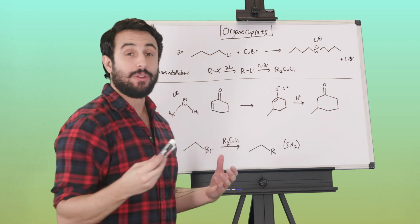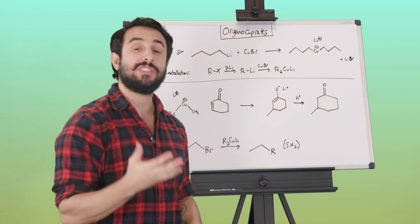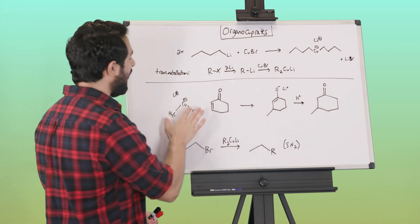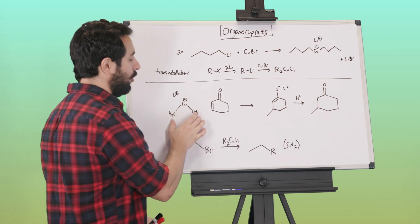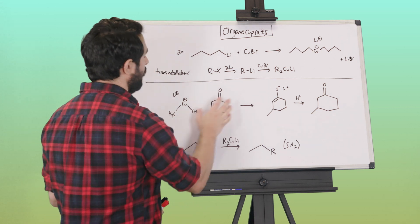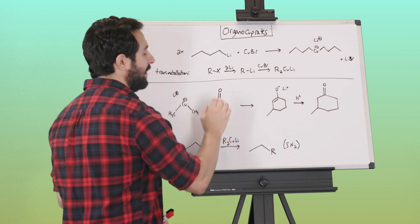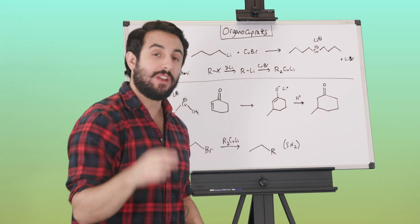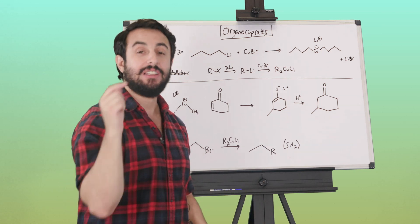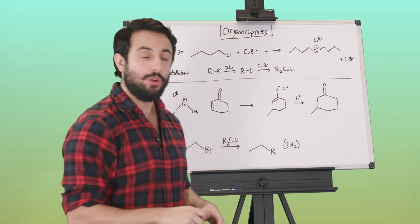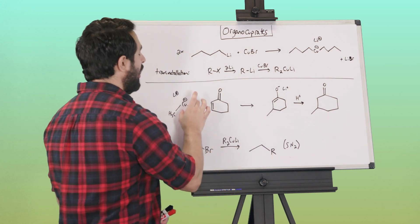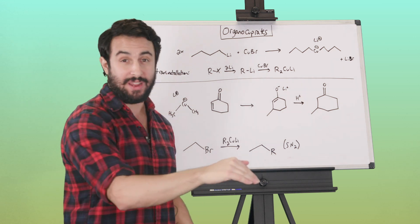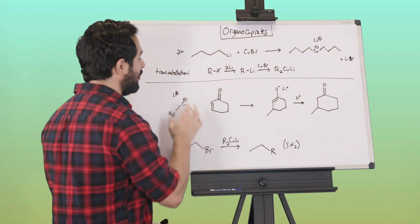So what are some things that organocuprates do? The most common application for organocuprates is as follows: say we have this one here where the alkyl groups are methyl groups. Now what we can do—we have this carbonyl-containing compound, and we saw that Grignard reagents like to attack carbonyls, we saw that organolithium reagents like to attack carbonyls—but instead, organocuprates are going to do something slightly different. These are not as reactive. Organolithium compounds are extremely reactive, but these are much less so. These are a bit softer.